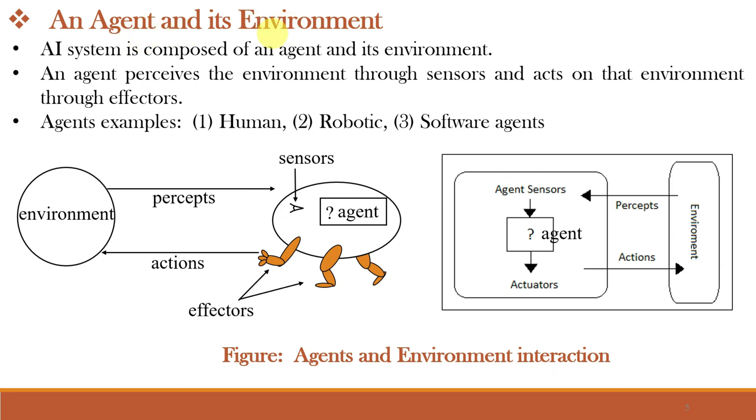Now let us understand agent and its environment. Any artificial intelligence system consists of agent and its environment. These both figures show agents and environment interaction. An environment is everything in the world which surrounds the agent, but the environment is not a part of the agent itself. An environment can be described as a situation in which an agent is present. And the agent will act in the environment. The agent will perceive the environment through the sensors and will act on the environment using effectors. The agents can be human agents, robotic agents, or even software agents.